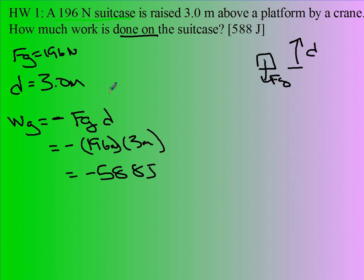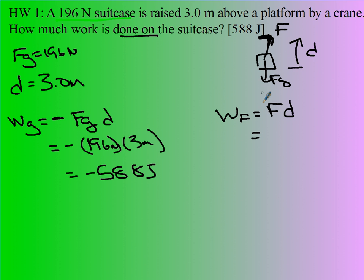Now that's one way to interpret this problem. Another way is the work done by the force being applied upward. If I'm looking at the force applied up, I have to assume it's just overcoming gravity, in which case the work done by F is going to be F times d. I'm going to assume F equals mg, so this is 196 newtons times 3 meters, or positive 588 joules.